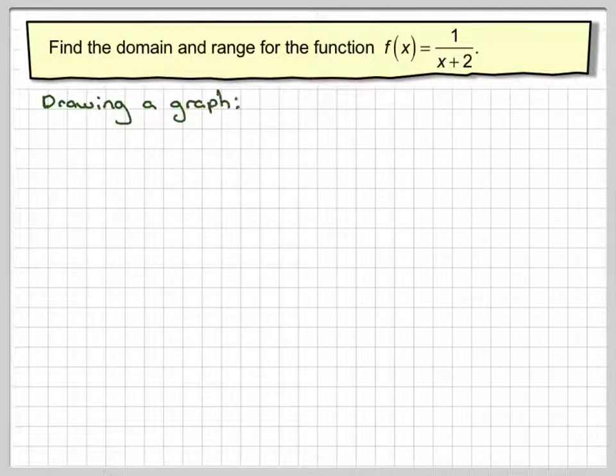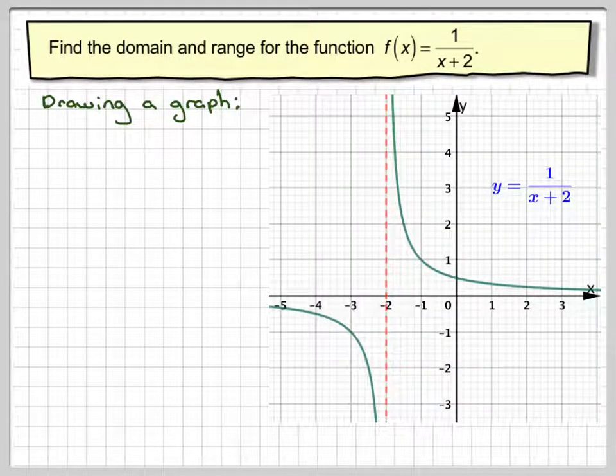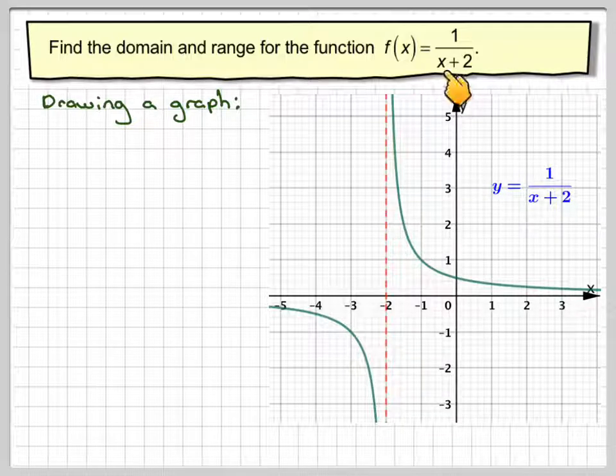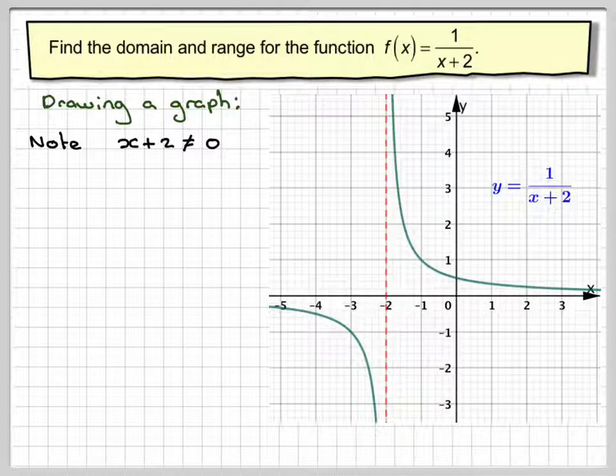So drawing the graph, here is a graph of the function. Now notice that you should have realized that x plus 2 cannot be equal to 0 because you cannot divide by 0.